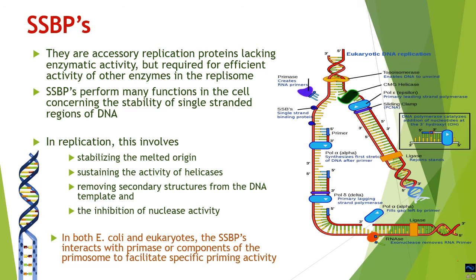SSBPs also inhibit nuclease activity. When SSBPs bind to the single-stranded DNA, primase action follows. In prokaryotes, primases bind after SSBPs to the single-stranded DNA at the origin of replication, while in eukaryotes this function is done by pol alpha. SSBPs interact with primase and signal it to come and bind to the melted single strands to start primer synthesis, which is then extended by the polymerases.